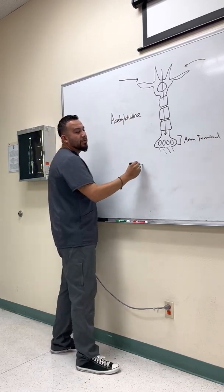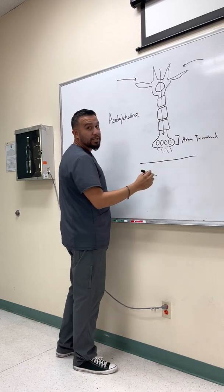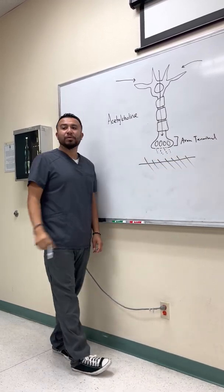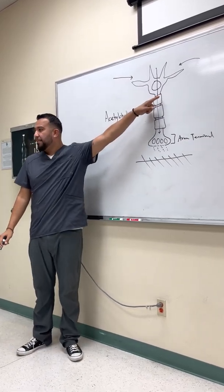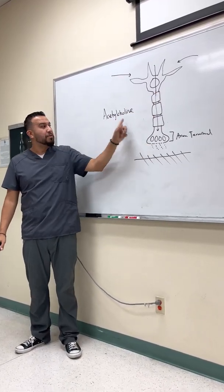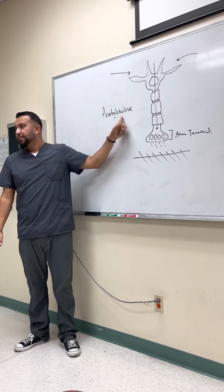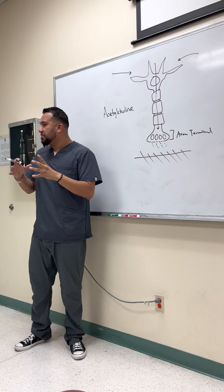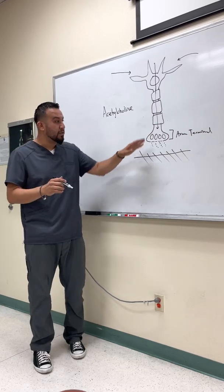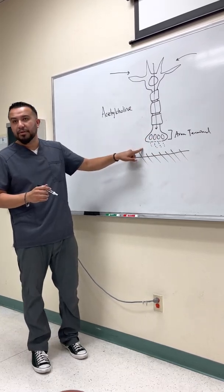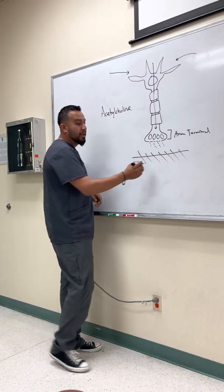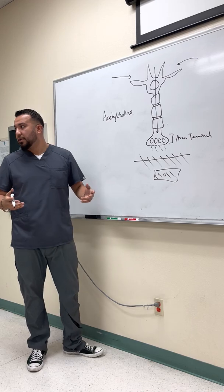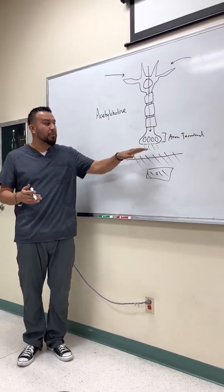The target tissue in this case is the muscles. The little lines here represent receptor sites. Think of it this way: the neuron is the pitcher, the neurotransmitter acetylcholine is the ball, and the receptor sites are the catchers. All three elements must be intact for the signal to pass through the synaptic cleft and stimulate the muscles to contract.